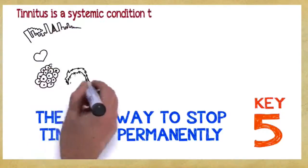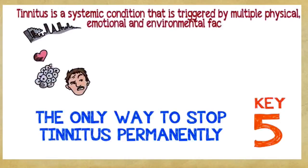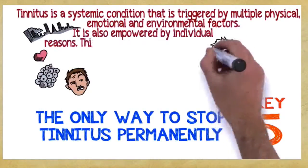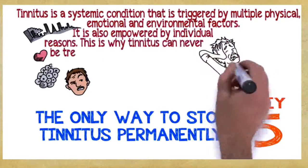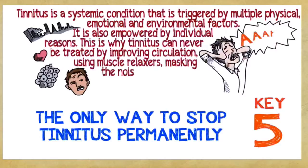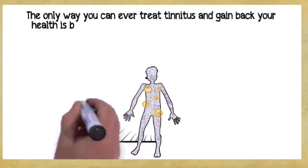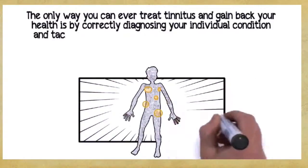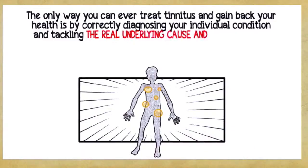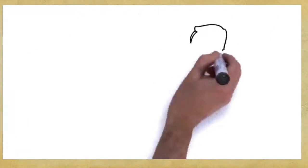Key number five. The Only Way to Stop Tinnitus Permanently. Tinnitus is a systemic condition that is triggered by multiple physical, emotional, and environmental factors. It's also empowered by individual reasons. This is why tinnitus can never be treated by improving circulation, using muscle relaxers, masking the noise, or cutting a nerve in your auditory system. The only way you can ever treat tinnitus and gain back your health is by correctly diagnosing your individual condition and tackling the real underlying cause and circumstances that promote your tinnitus, following a complete, multi-dimensional, holistic program.